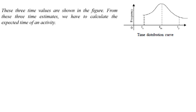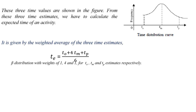These three time values are shown in the figure. From these three time estimates, we calculate the expected time for an activity. It is given by the weighted average of the three time estimates: Te = (T0 + 4Tm + Tp) / 6.